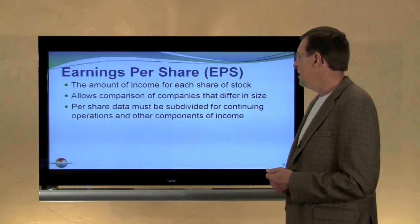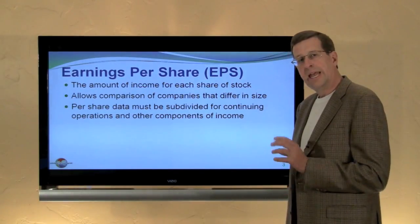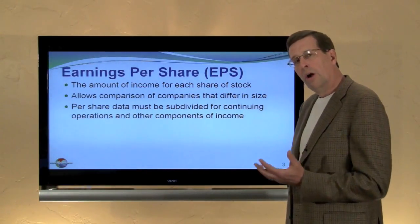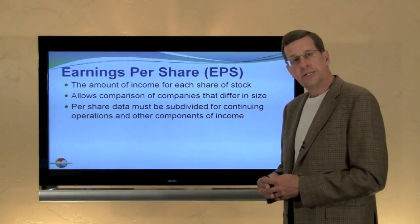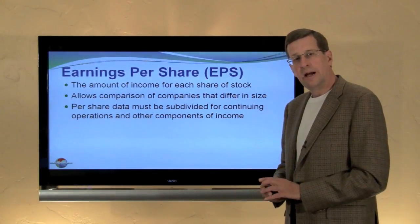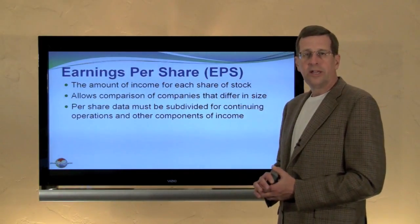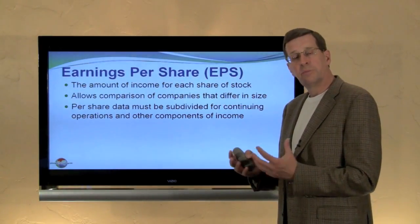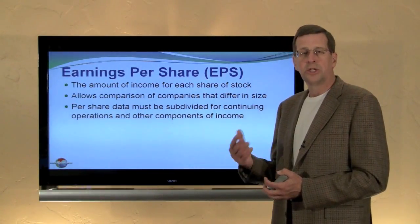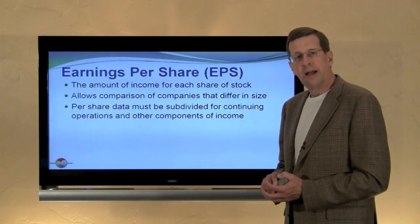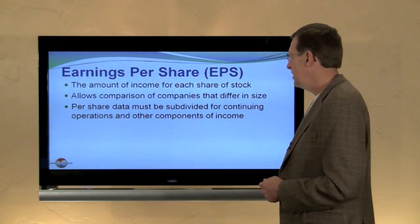Per share data must be subdivided into continuing operations and income from other categories. Earlier in the chapter we looked at income from continuing operations, discontinued operations, extraordinary items — that presentation. If we have those special categories of income, then when we show per share data we're also going to show selected amounts per share for key categories on the income statement.